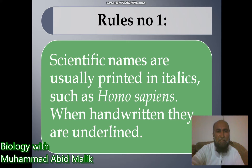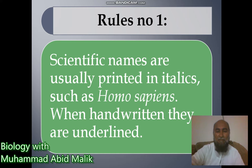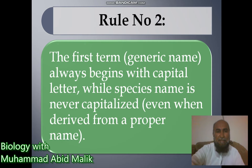The first rule is that scientific names are usually printed in italics — for example, Homo sapiens. If written in handwritten form, we underline the name. The second rule is that the generic name always begins with a capital letter, while the species name is never capitalized, even when derived from a proper name.